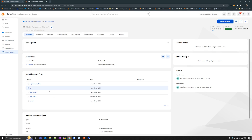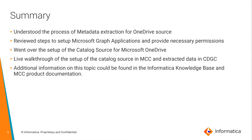Those are the steps needed to successfully extract metadata from OneDrive catalog sources. To summarize: we understood the process of metadata extraction for OneDrive, reviewed the steps to set up a Microsoft Graph application and provide the necessary API permissions, went over the catalog source setup in Metadata Command Center, and had a live walkthrough of the configuration and how extracted metadata looks in CDGC. Additional information can be found in the Informatica Knowledge Base and in the Metadata Command Center product documentation.